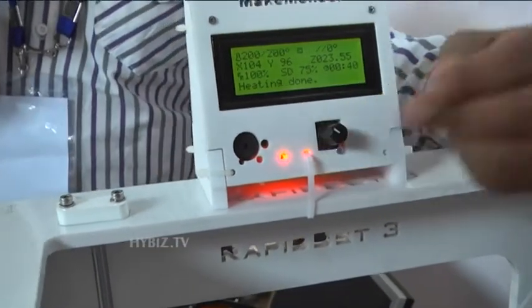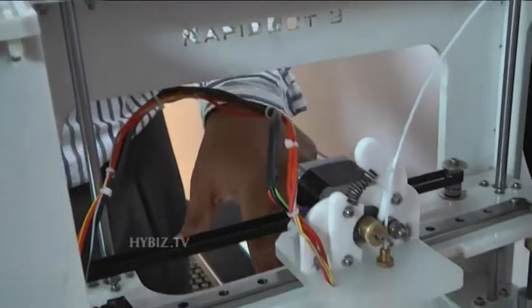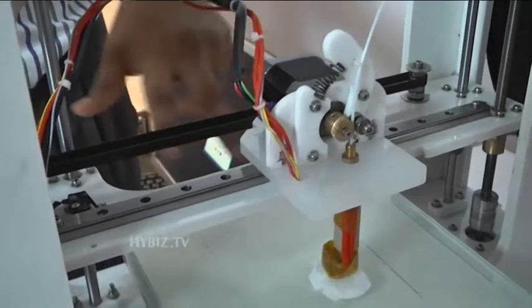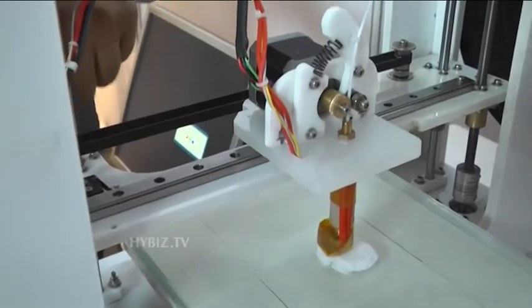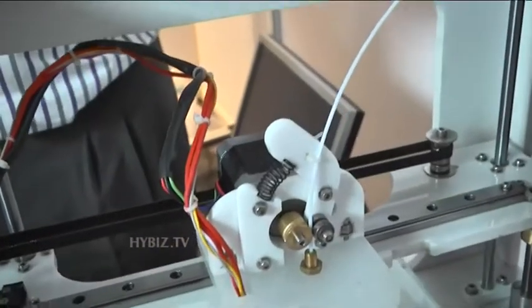Once that is done, the printer will start printing. It is basically an XYZ robot mechanism where for the Z axis we are using two motors, for X axis one motor, and for Y axis one motor.